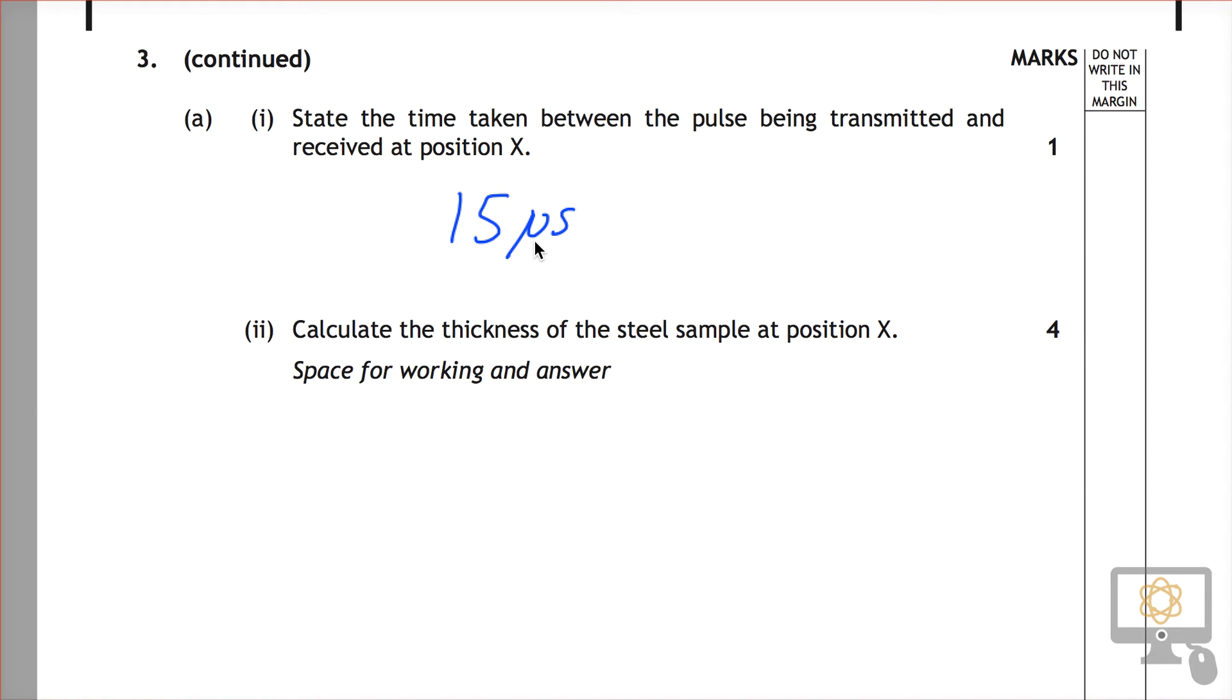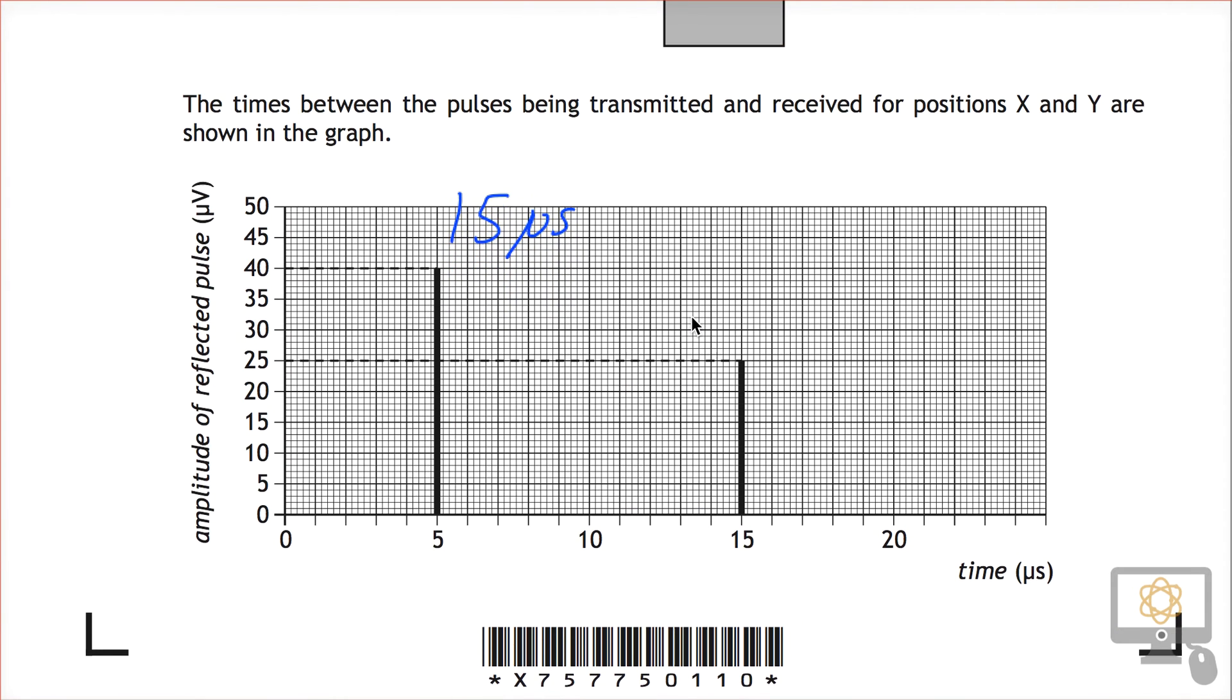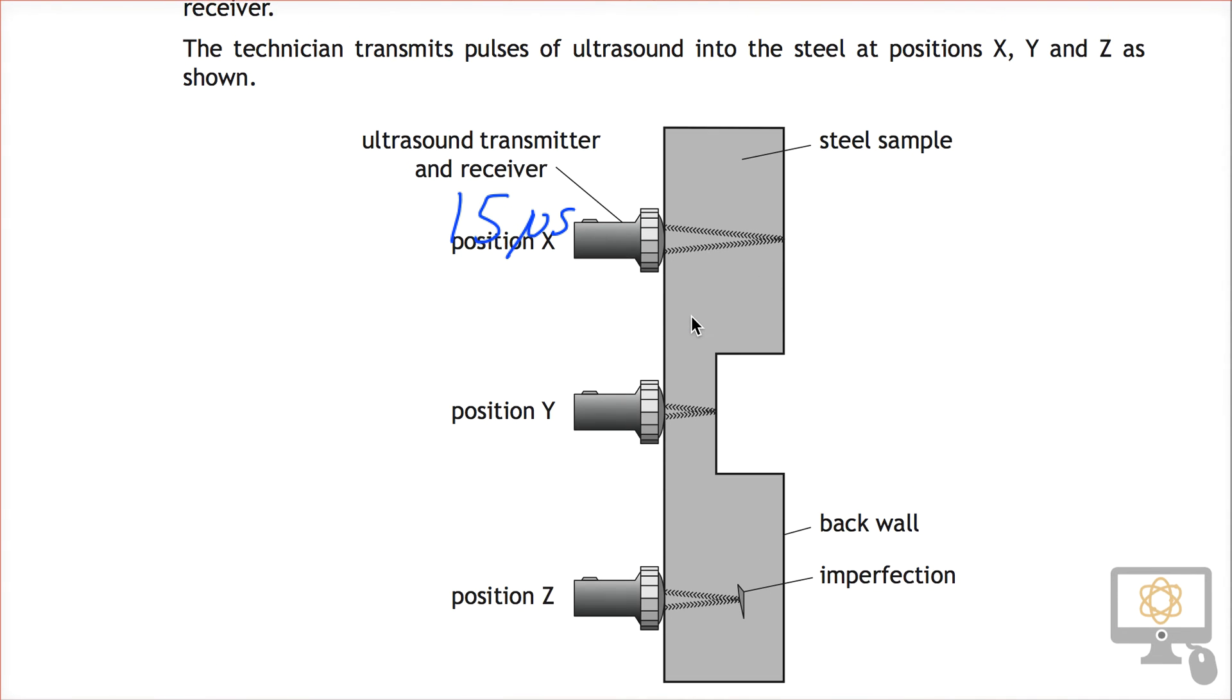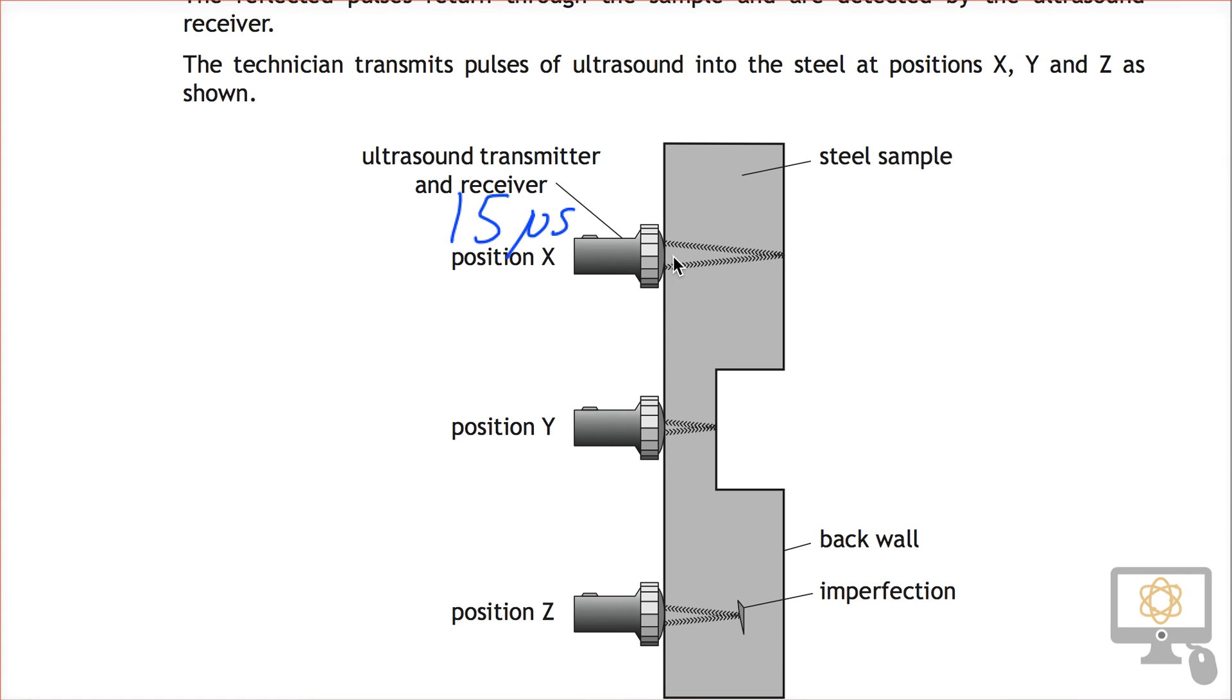So we're going to calculate the thickness of the steel at position X. Let's have a look back up through here and think about this carefully. It's taken 15 microseconds at position X for the signal to travel along and back again.